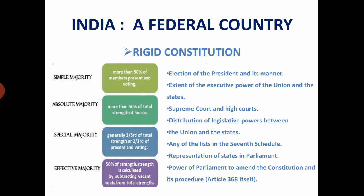The next feature of Indian federation is a rigid constitution. The Indian constitution is flexible as well as rigid, which means that certain parts of the constitution can be amended by simple majority. However, the basic provisions cannot be amended unilaterally by one level of government, but through special majority — which means that such an amendment needs to be approved by a two-thirds majority of members present and voting in both houses of parliament and ratified by 50% of the states.